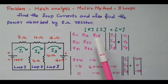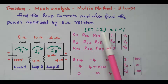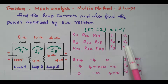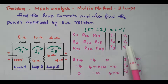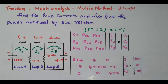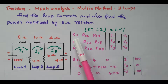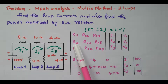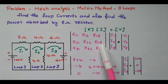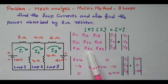By the matrix method, we apply V = I × R, based on Ohm's law. We need to frame the voltage matrix, current matrix, and resistance matrix. The resistance matrix contains elements R11, R12, R13, R21, R22, R23, R31, R32, and R33.